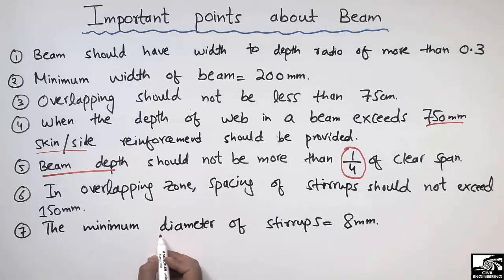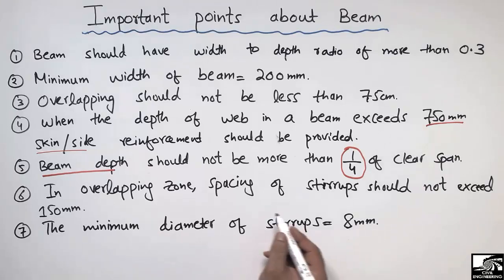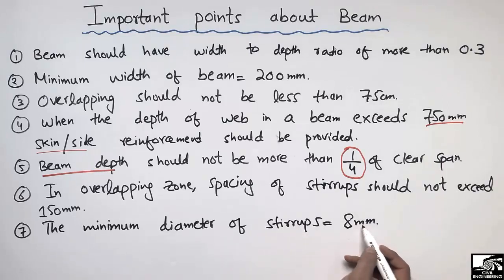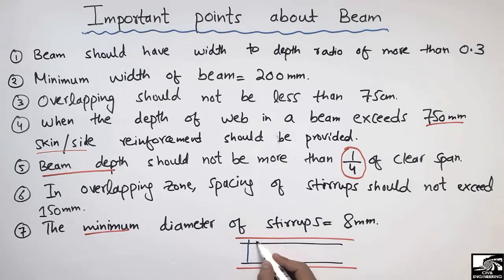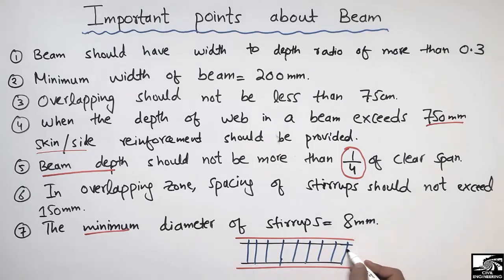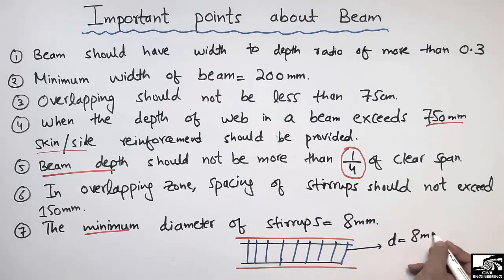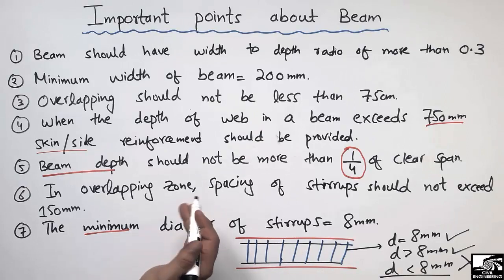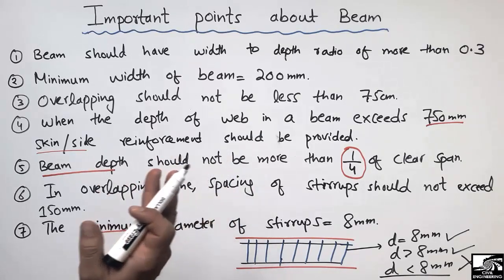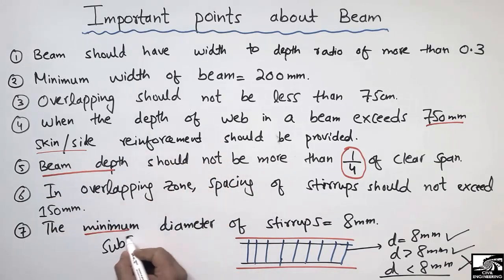The seventh point states that the minimum diameter of stirrups is 8mm — the stirrup diameter should not be less than 8mm. These stirrups, also called transverse reinforcement, are provided for confinement and to increase the shear capacity of the beam. The diameter must be at least 8mm or greater. I hope you understand these important points for beam design. For more civil engineering videos, please subscribe to the channel.